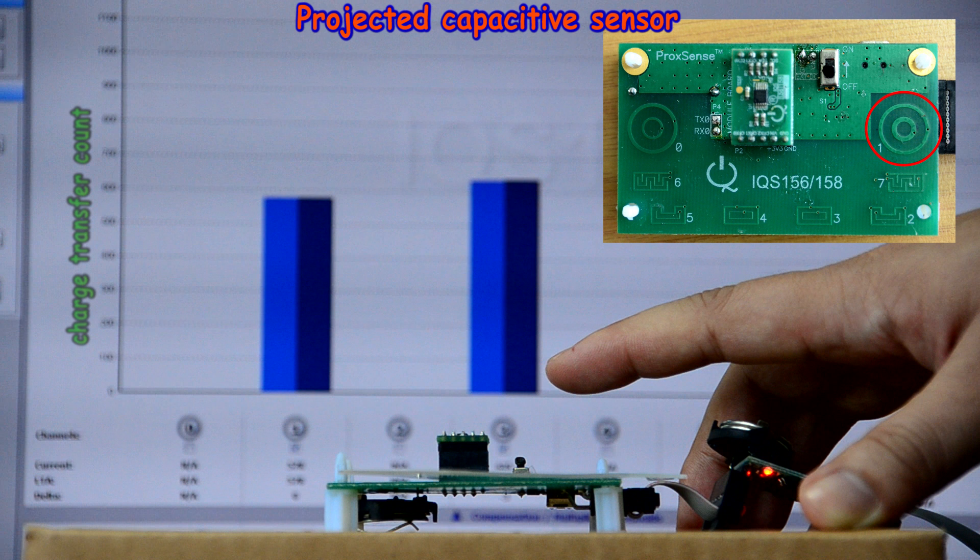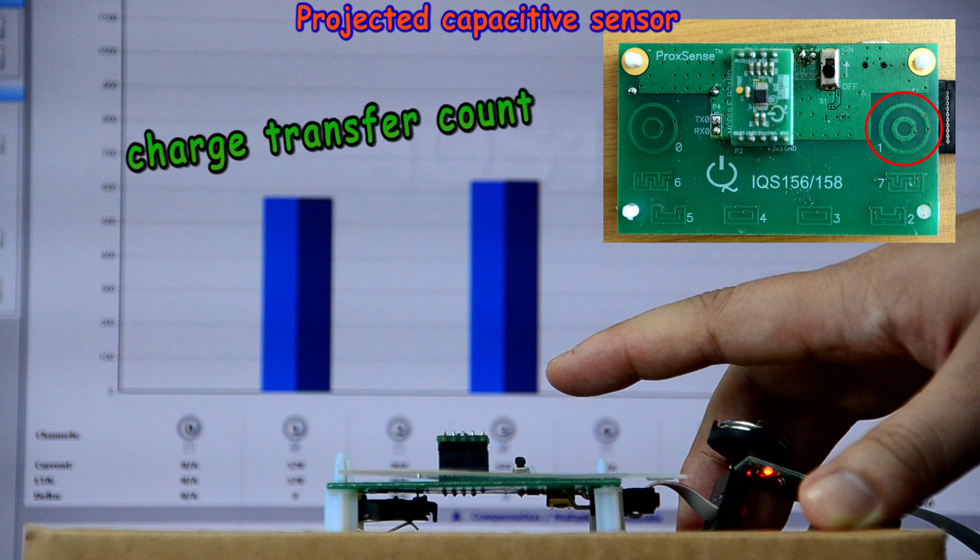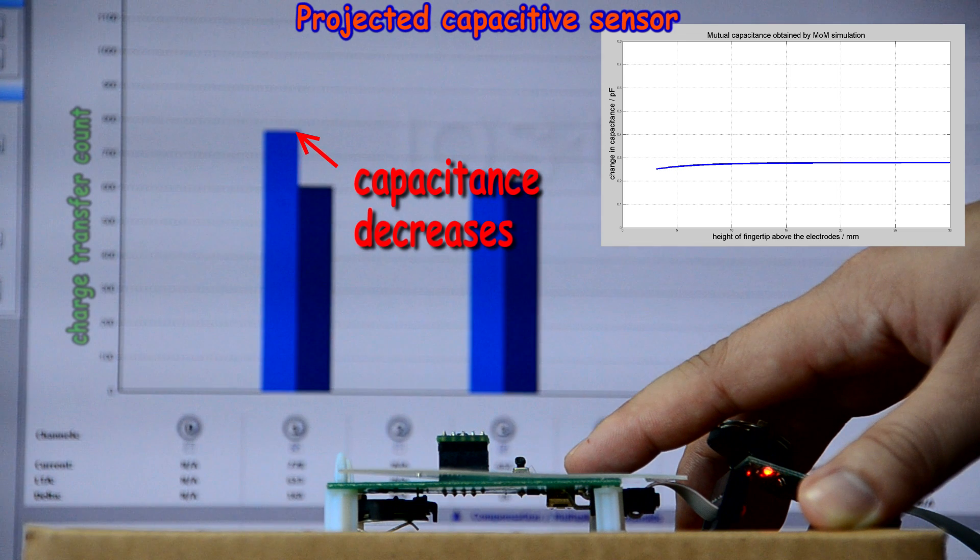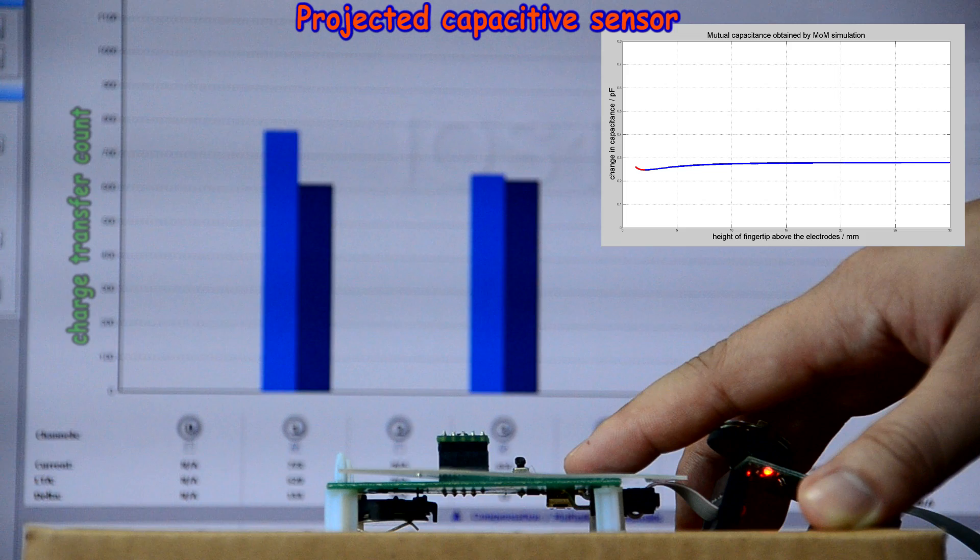In this chart, the vertical axis represents the charge transfer count, which is the inverse of the capacitance. When the finger moves towards the electrodes, the capacitance decreases, hits its minimum, and then shoots up quickly.